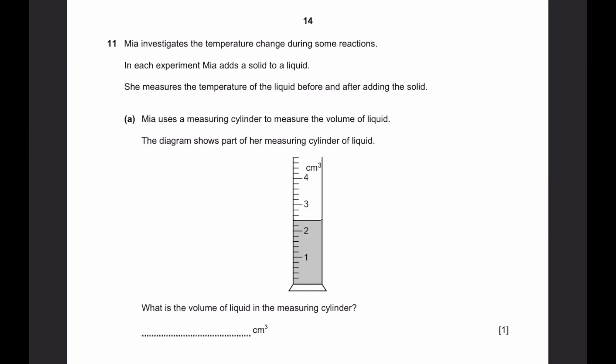Now I can go to question 11. Mia investigates the temperature change during some reactions. In each experiment, Mia adds a solid to a liquid. She measured the temperature of the liquid before and after adding the solid. Part A. Mia uses a measuring cylinder to measure the volume of liquid. The diagram shows part of a measuring cylinder of liquid. What's the volume of liquid in the measuring cylinder? It's greater than 2 and less than 3 centimeters cubed. You can see that there are 5 divisions between each large division. So we can divide the difference by 5. 3 minus 2 is 1, and 1 divided by 5 is equal to 0.2. This is the volume of liquid between each division. So if there are 2 more divisions, that means 2 plus 0.2 plus 0.2. That's equal to 2.4 centimeters cubed. That's the answer.